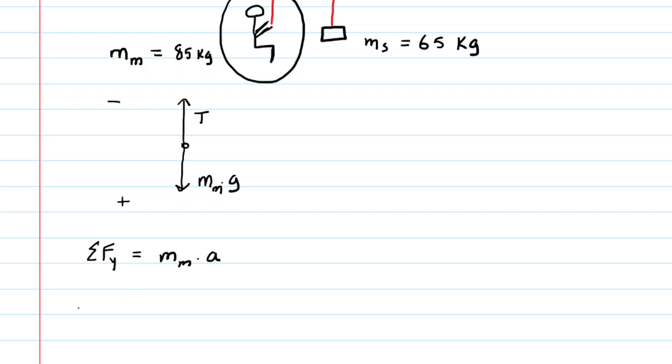So we then have, for the sum of the forces, the positive gravitational force, so that would be positive m sub m times g, and then the negative tension force, so minus T. And this would equal the mass times the acceleration. That's great. Now, we're going to go over and look at a different system. We'll return to this equation in just a moment.